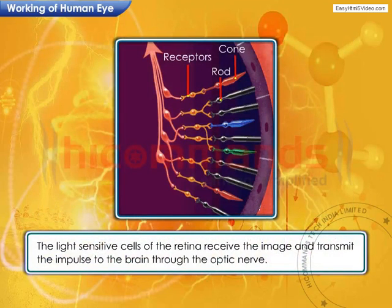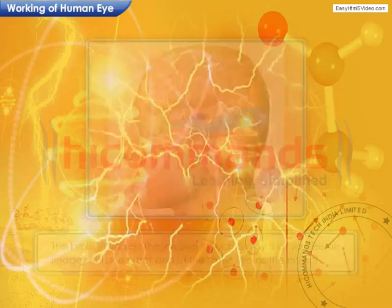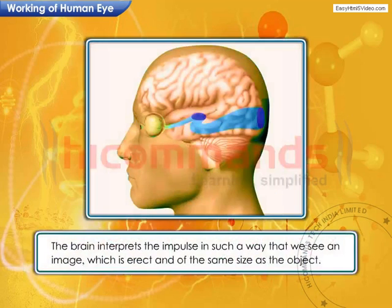This image is received by the light sensitive cells of the retina, which in turn transmits the impulse to the brain through the optic nerves. The brain interprets the impulse in such a way that we see an image which is erect and of the same size as the object.